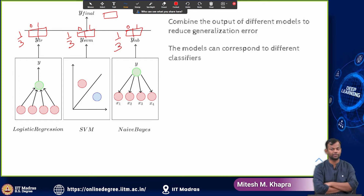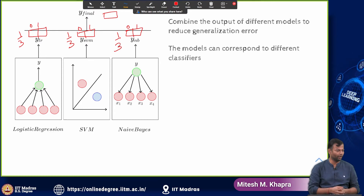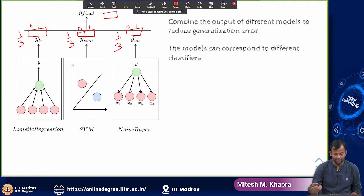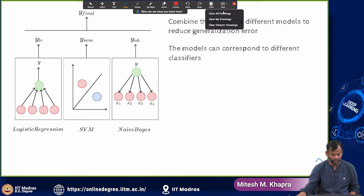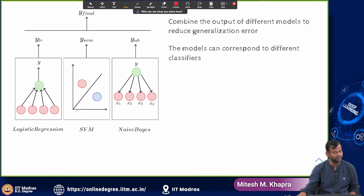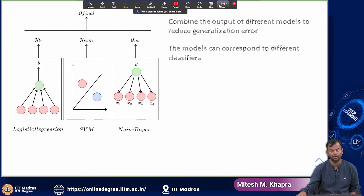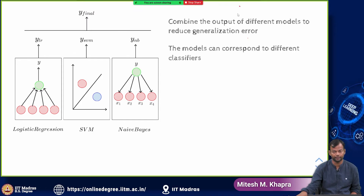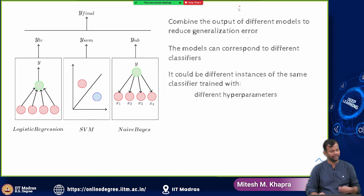This is used as a form of regularizer because now you are not relying on a single model — three different models are going to make the predictions. These models could be different classifiers, such as logistic regression, SVM, and IBASE. Or it could also be the case that you have the same classifier but trained with different hyperparameters.